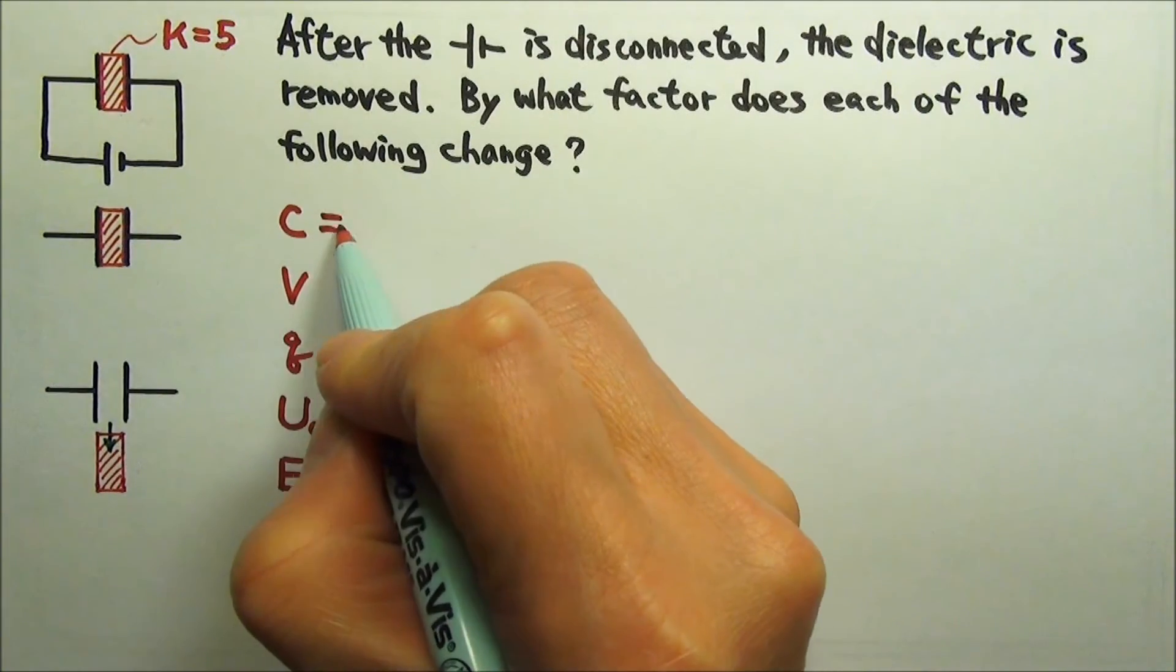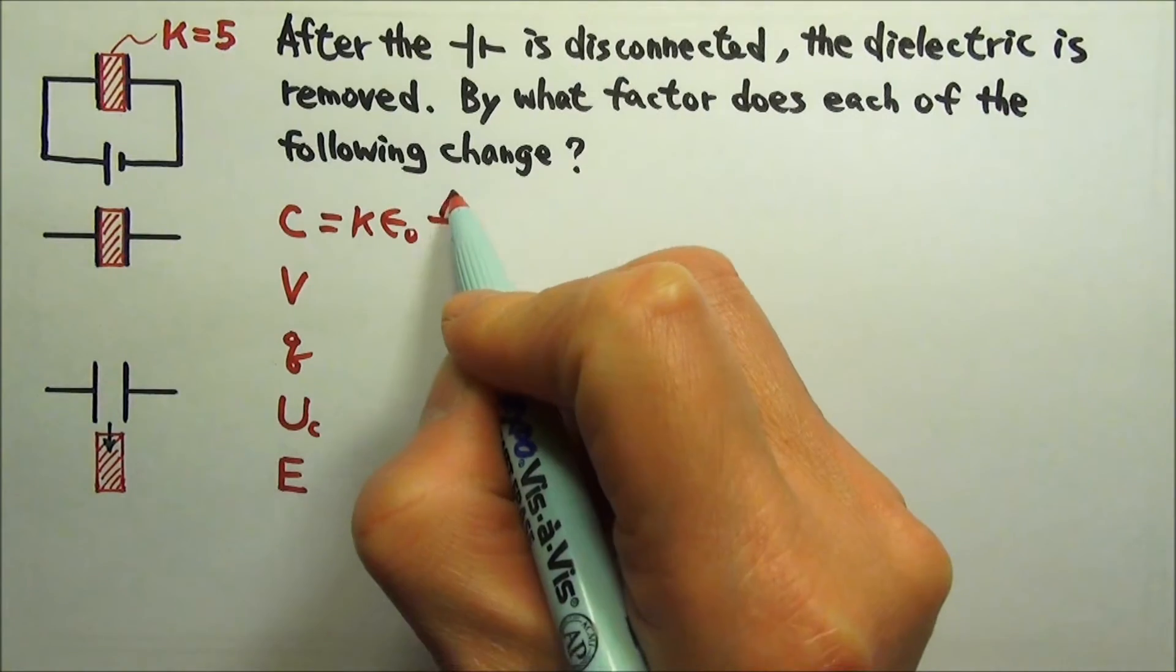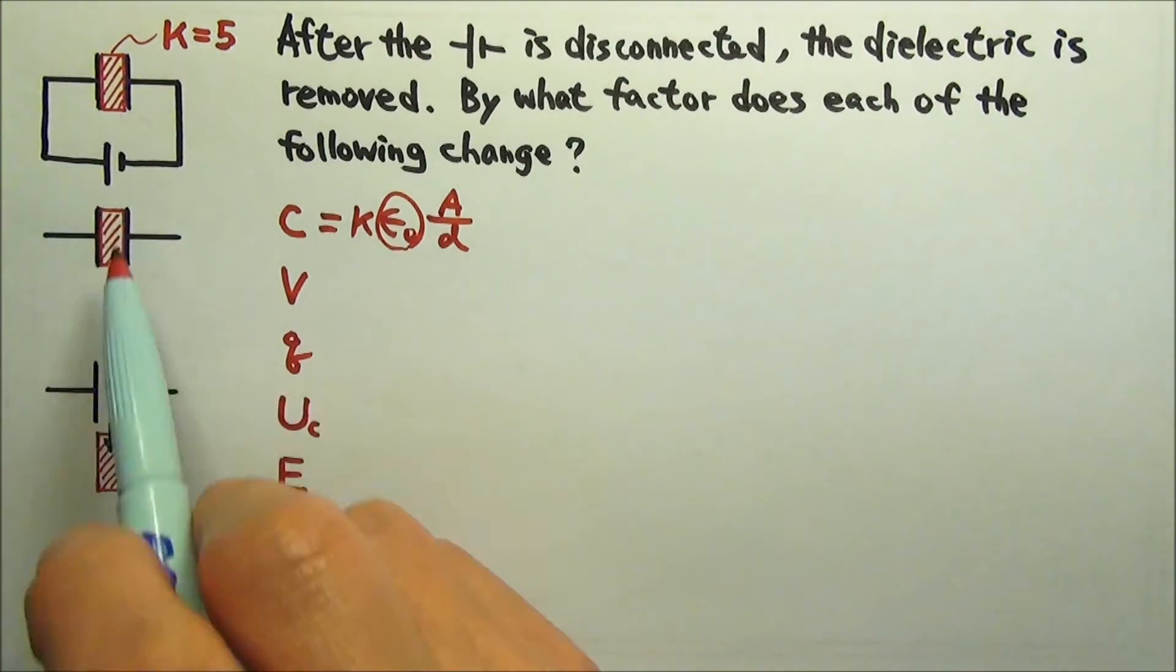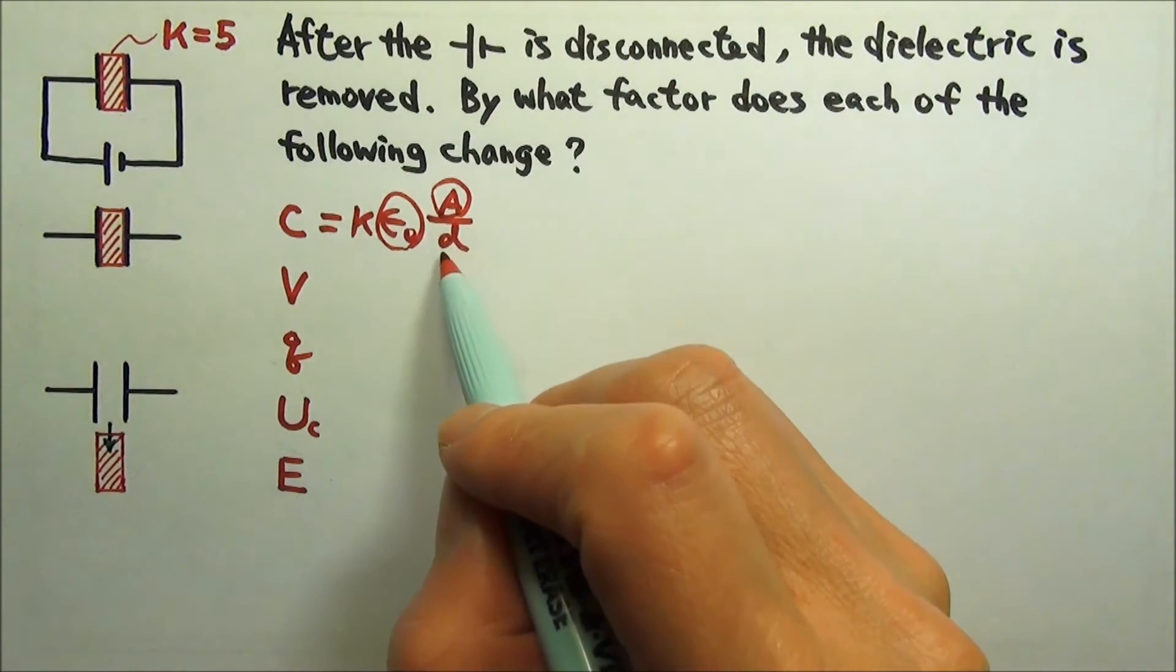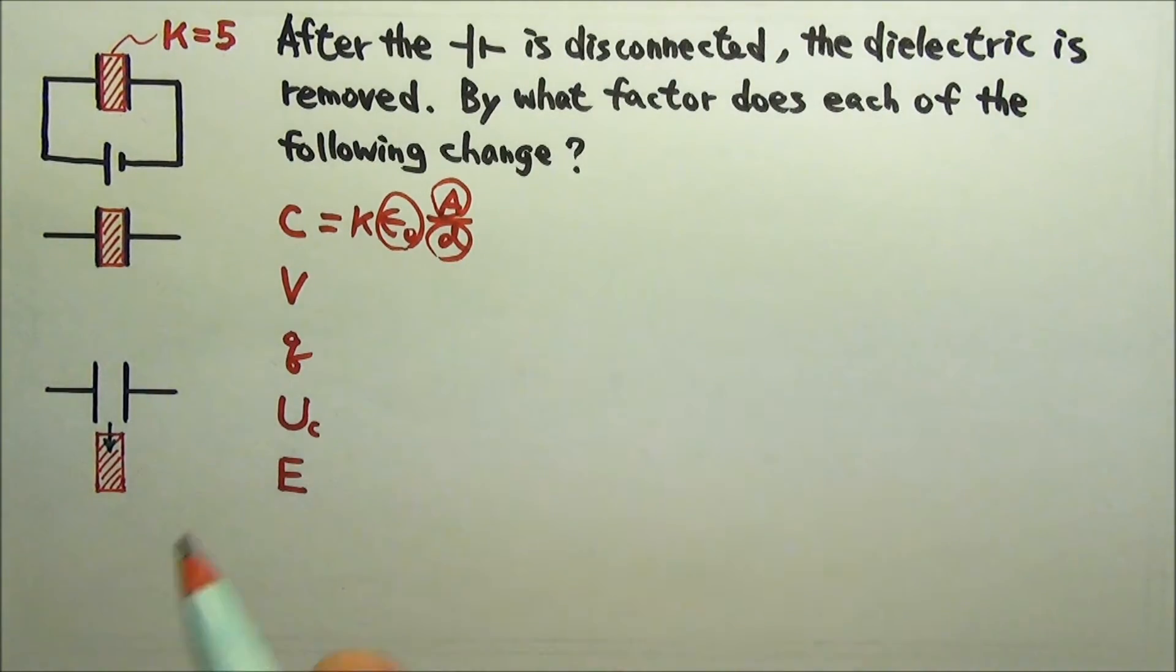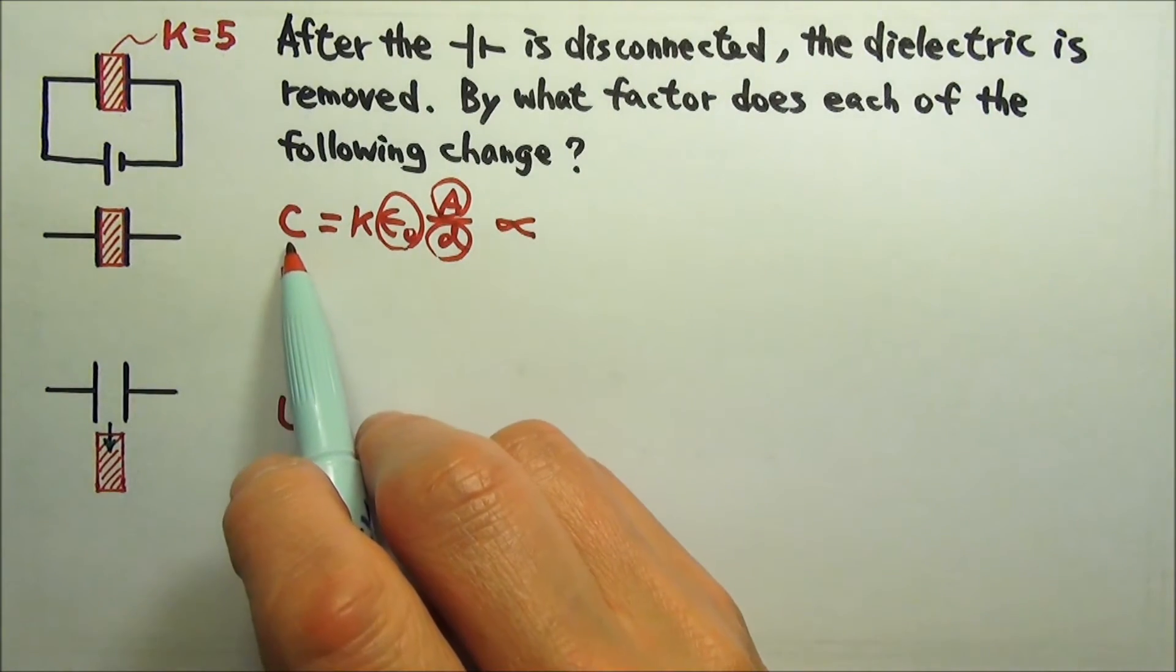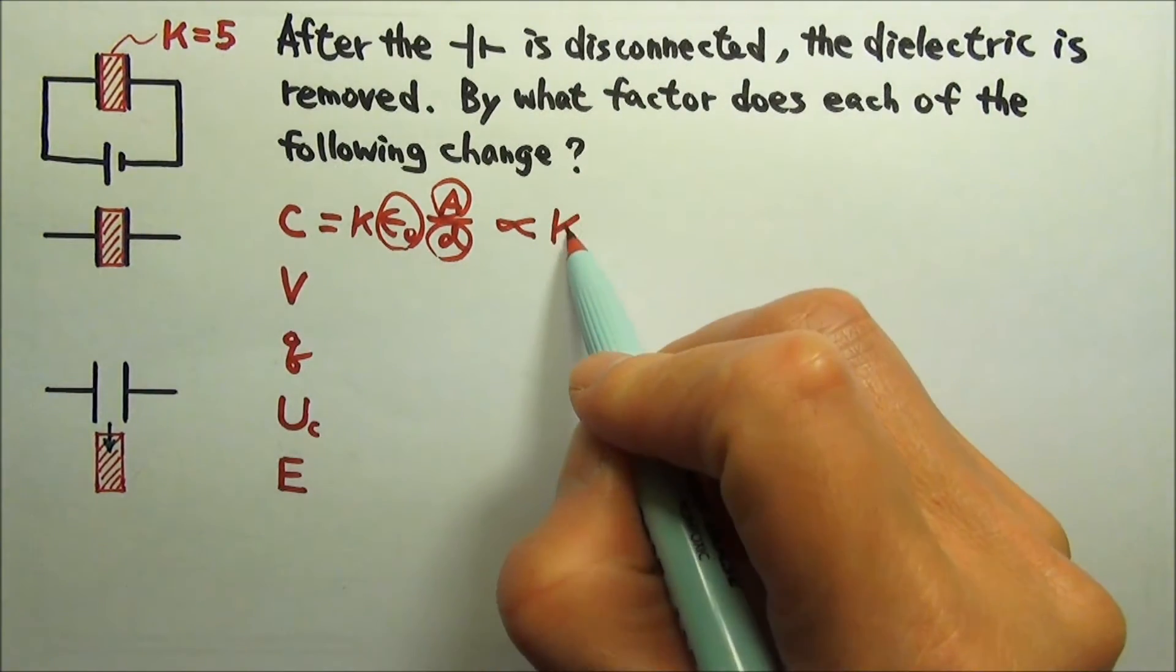C equals kappa times epsilon naught A over D. Epsilon naught is always a constant, and in this case, A and D both stay the same as well. Kappa is the one that changes. So capacitance is proportional to kappa.